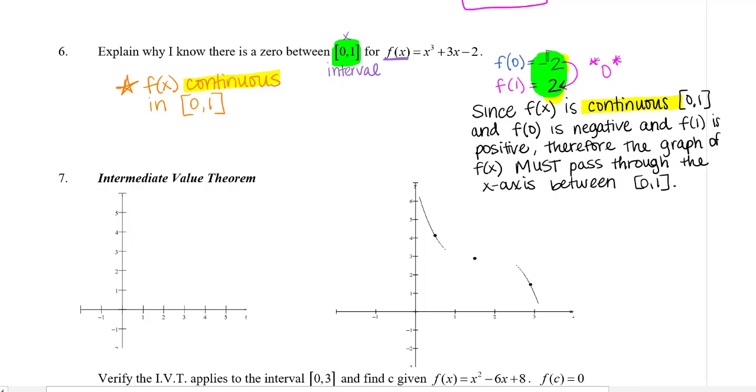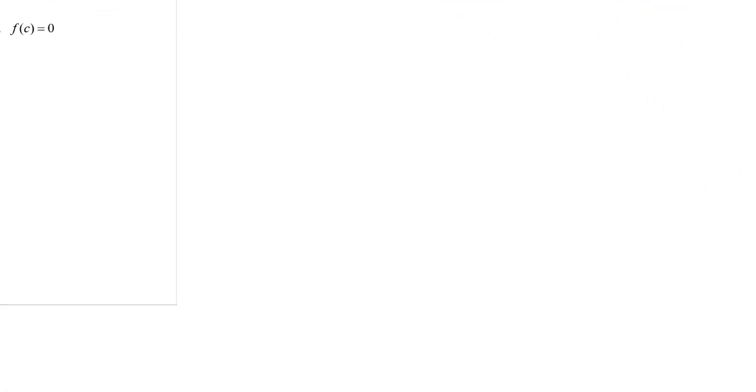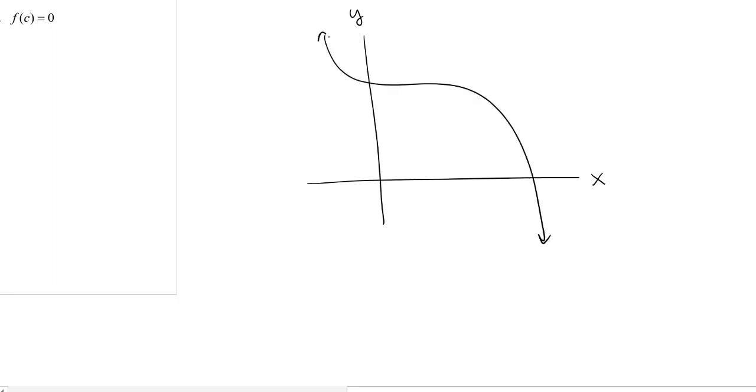Now, this is true for any y-value, not just zero. It's just most helpful, really, when you're dealing with zero. So, for example, I could show you a graph here. X and y. Okay, looks something like so. And let's say this is a y-value of 4, 3, 2, and 1.